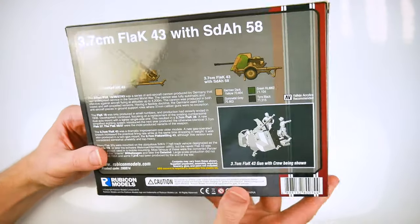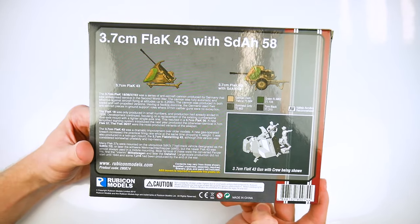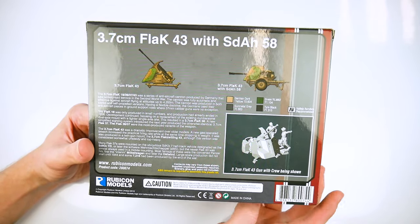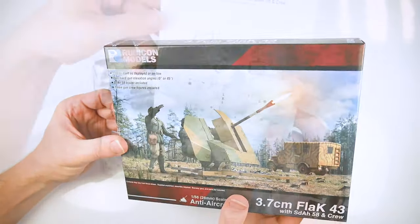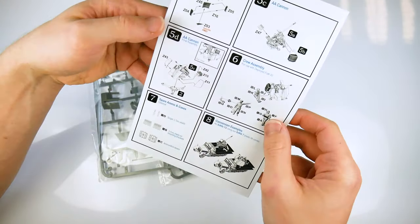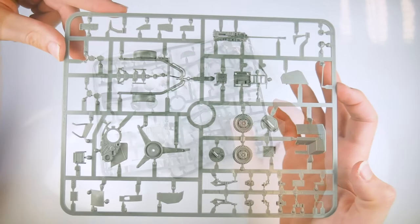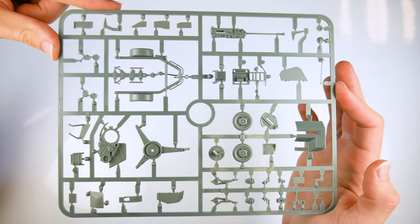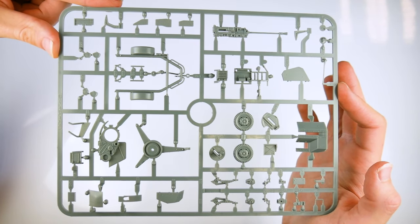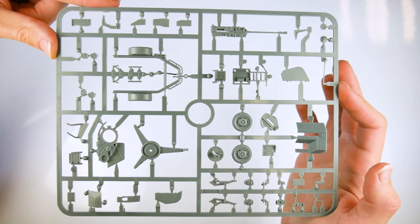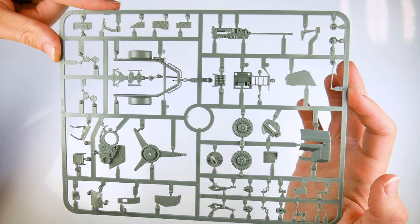Lastly we have the 3.7 centimetre Flak 43 anti-aircraft gun. The options available on the single frame allow for the use of a static or wheeled mount and there's a crew of three included with clips of the large ammunition used by this weapon. With a little work this could be converted for use on the Panzer IV chassis to create the Möbelwagen or Ostwind variants for the late war Flakpanzer.